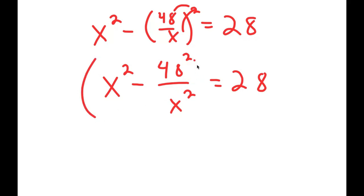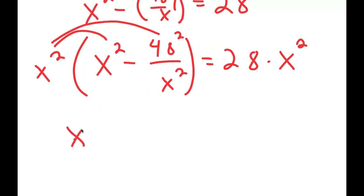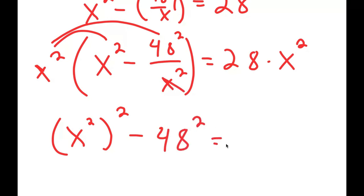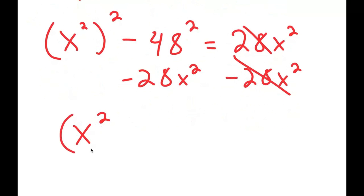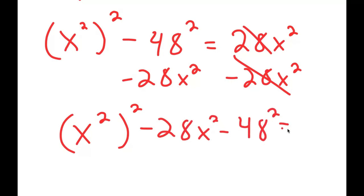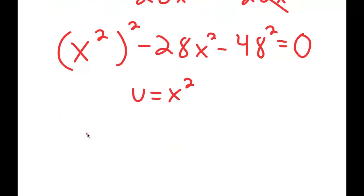Now I'm going to multiply both sides by x squared. Distributing on the left-hand side: x squared times x squared is x to the power of 4. The minus 48 squared over x squared times x squared — the x squared terms cancel — so I just get 48 squared. This equals 28 x squared on the right. Subtracting 28 x squared from both sides, I get x to the power of 4 minus 28 x squared minus 48 squared is equal to zero. Now I'm going to set u equal to x squared, giving u squared minus 28u minus 48 squared equals zero.